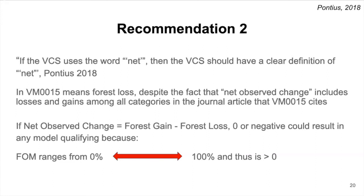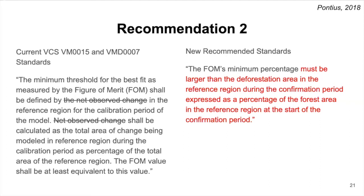Net observed change could mean forest gain minus forest loss, which would be zero or negative when forest loss is greater than or equal to forest gain. This could result in any model qualifying because the FOM is a percentage ranging from 0 to 100% and is never negative. Pontius 2018 recommends changing the wording of net observed change to specifically define what the FOM must be larger than.